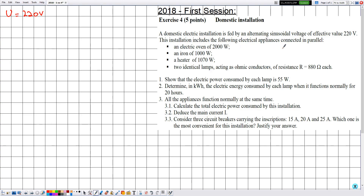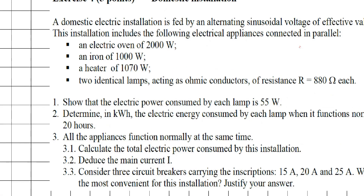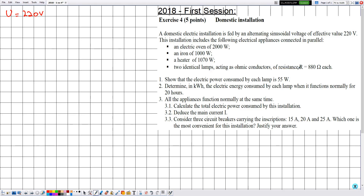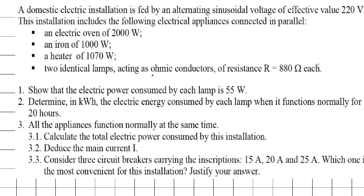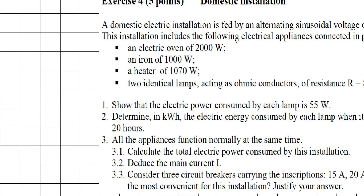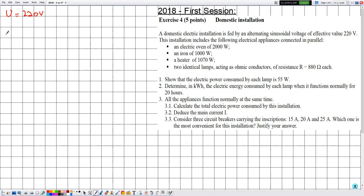This installation includes the following electric appliances connected in parallel: an electric oven of 2000 watts, an iron of 1000 watts, a heater of 1070 watts, and two identical lamps acting as ohmic conductors of resistance R equal to 880 ohms each. Ohmic conductor means we can apply Ohm's law to the lamps. These quantities represent the electric power of the given appliances, expressed in watts.